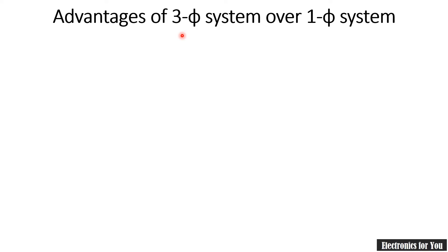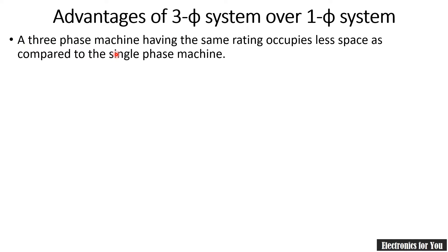Three-phase machines having the same rating occupy less space as compared to single-phase systems. For example, consider a single-phase machine of 3kW and a three-phase machine of 3kW. In case of the single-phase machine, its size will be more for the same rating, while in case of the three-phase system, its size will be smaller as compared to the single-phase machine.